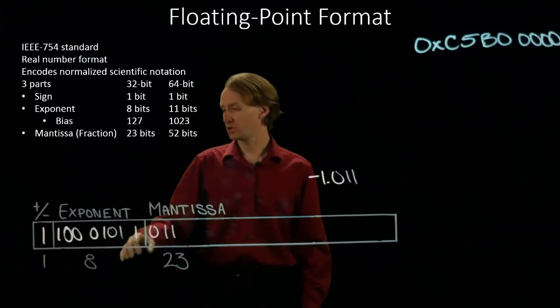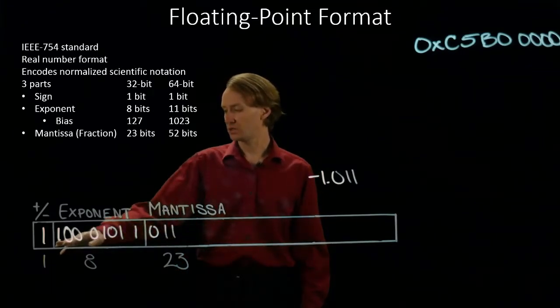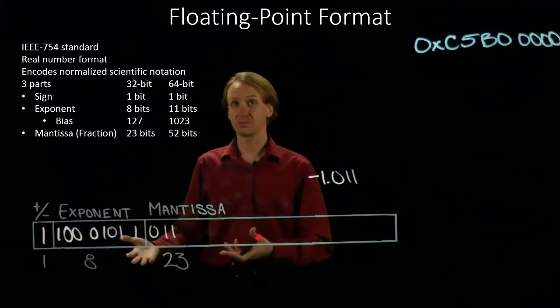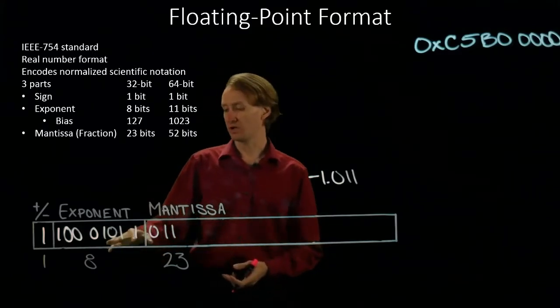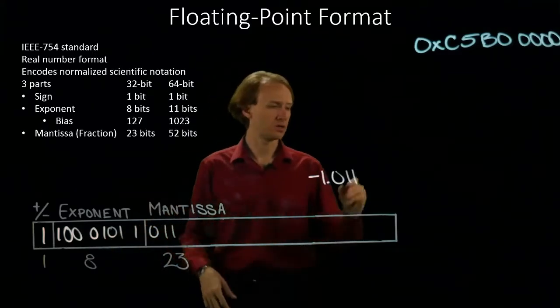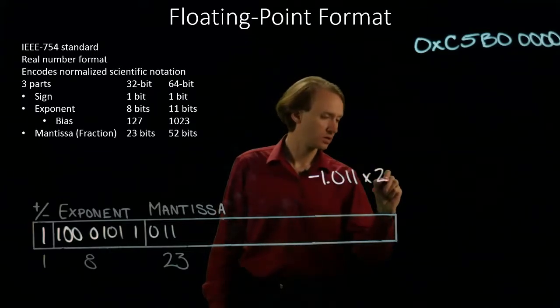Now I have my exponent. I have 128, which gives me my bias plus 1, and then I have 11. So, 11 plus 1 will give me 12.